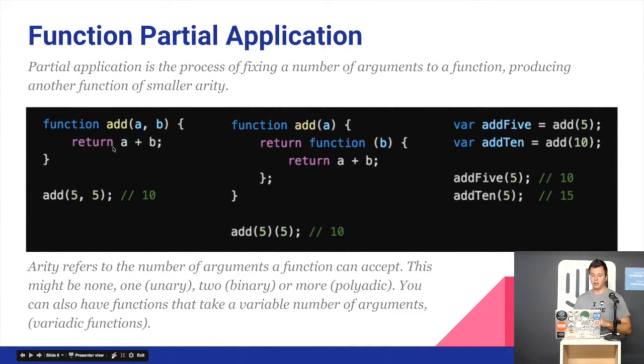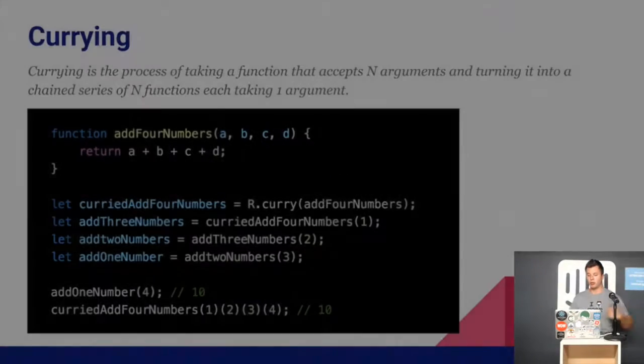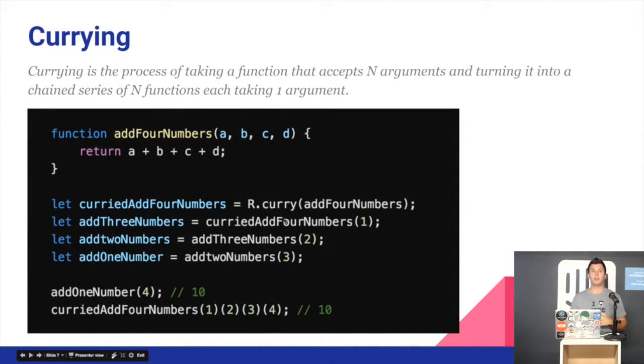In this case, I changed the function add into this one that returns another function and I did it manually to be able to call it in two steps. Now, if this function has four arguments, I will have to do four returns of four functions. I don't want to write that kind of code when I have nested returns of functions. So curry does that for us. We don't have to manually return the functions.